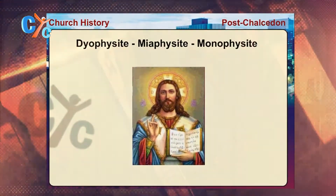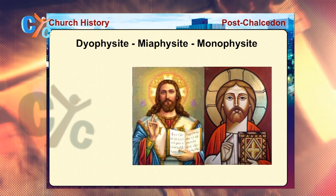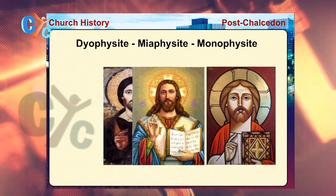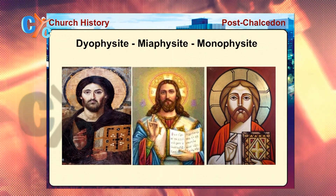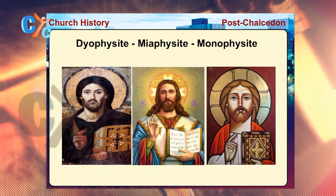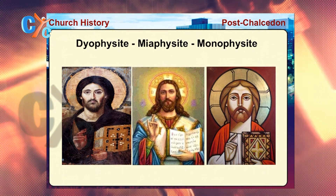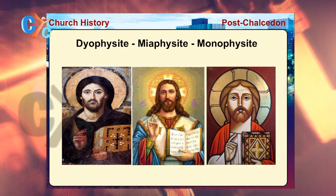After the council, charges were mutually exchanged between the two teams. I will show you three icons on the screen that represent these mutual charges. The first icon represents the miaphysite — we see that our Lord Jesus Christ is wearing two colors: the red color representing his humanity and the blue color representing his divinity.